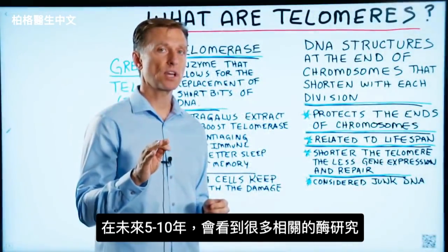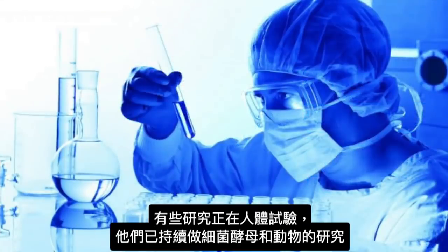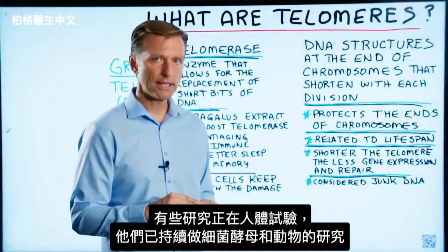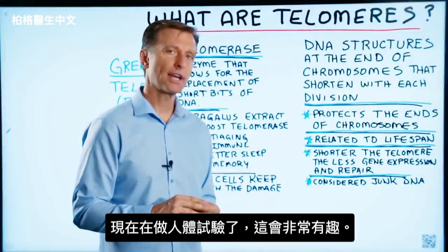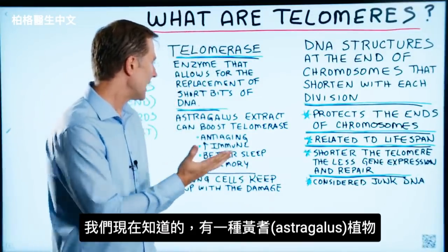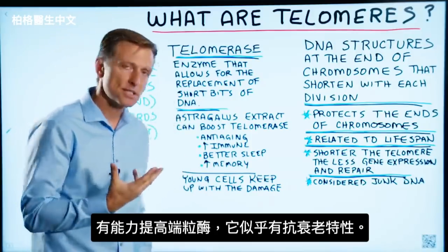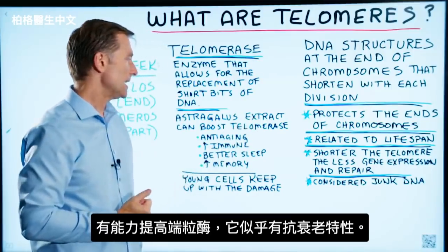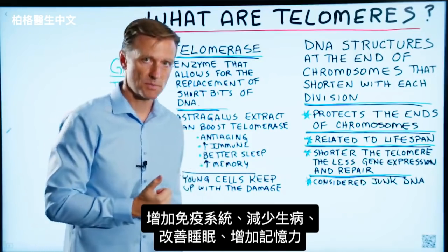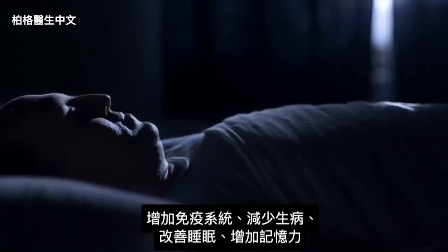You're going to see a lot of research coming up in the next five to ten years on this enzyme. There are some research studies going on right now on humans — they've been doing research on bacteria, yeast, and animals, but now they're actually starting to do it in humans. What we do know right now is there is a plant called astragalus that has the ability to boost telomerase, and it seems to have some interesting anti-aging properties: increasing your immune system, decreasing your frequency of getting sick, improving your sleep, and increasing your memory.